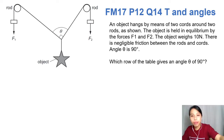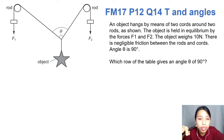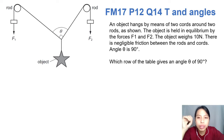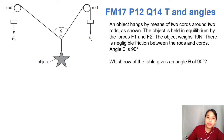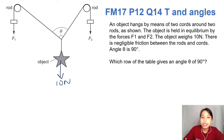So this one: an object hangs by two cords around two rods. It almost looks like a pulley system if you want to think of it that way — a double pulley. The object weighs 10 Newtons. There's negligible friction, which tells us something about the pulley rods.